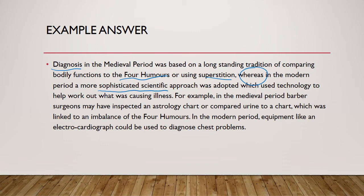Here's where I'm getting the extra marks. For example, in the medieval period, barber surgeons inspected an astrology chart — that's your superstition — or compared urine to a chart, which was linked to an imbalance in the four humours. And then in the modern period, equipment like an electrocardiograph could be used to diagnose chest problems. So I've got my example from the medieval period, my example from the modern period, and I've said the one point that makes them different.